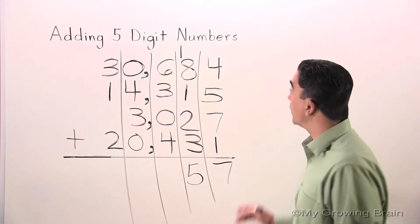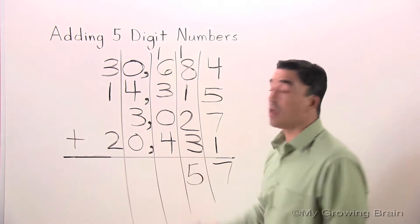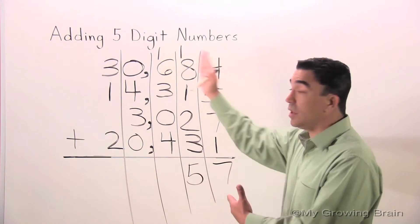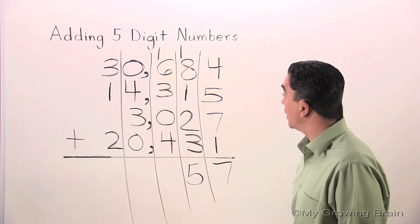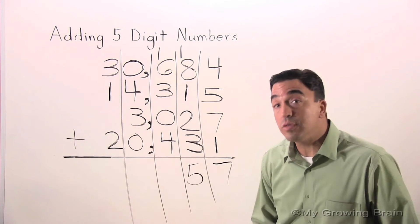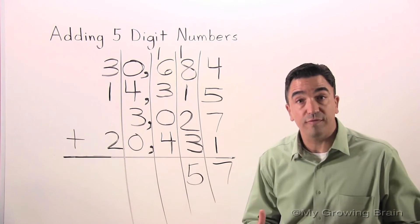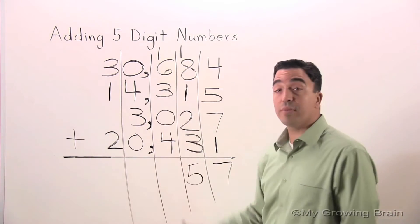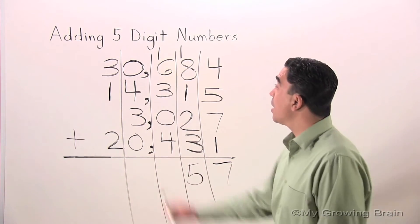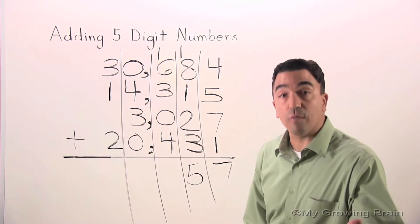Once again, I'm going to regroup the one or carry the one into the hundreds place. Again, I'm going to look for groups of ten. Six and four is ten. Ten plus three is thirteen. Thirteen plus one is fourteen.